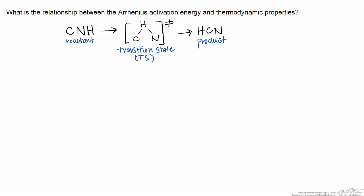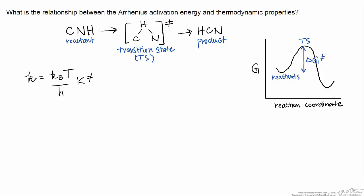We have shown previously that we could determine the rate of this kind of reaction. We wrote that the rate constant from transition state theory for this kind of reaction — which would be a first-order rate constant — is equal to a collection of constants like Boltzmann's constant and Planck's constant with the temperature, and then an equilibrium constant for the transition state calculated based on the Gibbs free energy difference between the transition state and the reactant, where that equilibrium constant is the exponential of the negative Gibbs free energy change over RT.